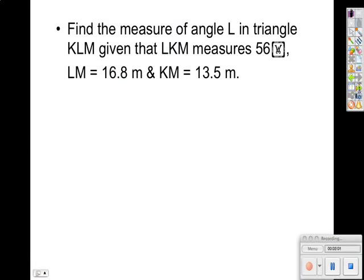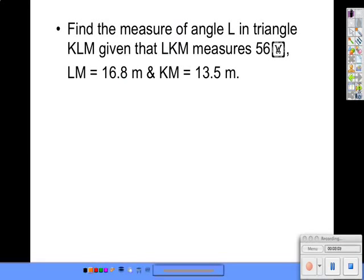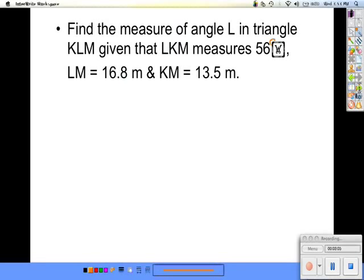This is 56 degrees. So find the measure of angle L in this triangle. First thing we should do is draw the picture so that we know exactly what we're looking at. LKM is 56, LM is 16.8, and KM is 13.5. So this is a law of sines problem.